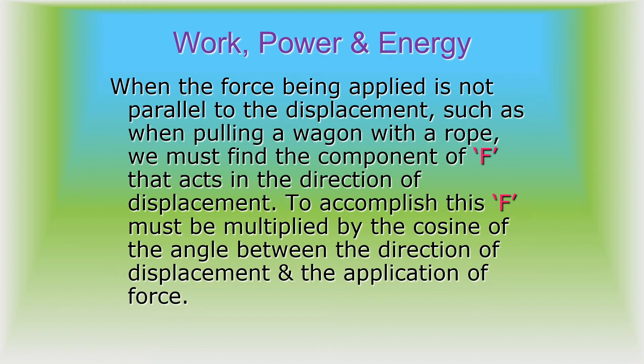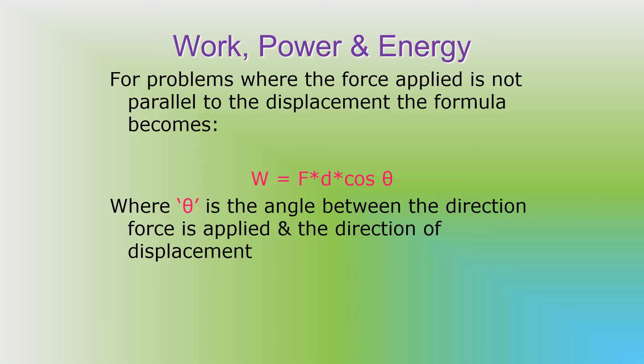When the force being applied is not parallel to the displacement, such as when pulling a wagon with a rope, we must find the component of force that acts in the direction of displacement. To accomplish this, force must be multiplied by the cosine of the angle between the direction of displacement and the application of force. The formula becomes: work equals force times displacement times the cosine of theta, where theta is the angle between the direction force is applied and the direction of displacement.